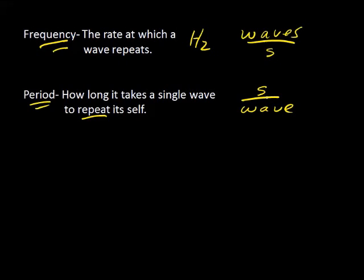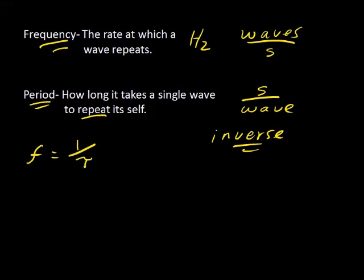If you look at this, you can quickly see that waves per second and seconds per wave are mathematically inverses of each other. So the frequency of any wave is the inverse of the period, and the period of a wave is the inverse of the frequency.